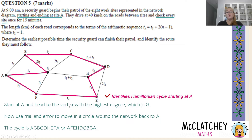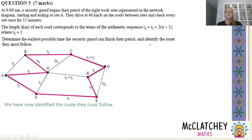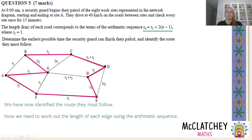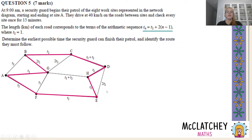By identifying a Hamiltonian cycle starting at A, you earn your first mark out of seven. You've also already answered the second part — identifying the route the security guard must follow. Now the next step is to work out the length of every edge using the arithmetic sequence. We're told t_1 = 1, so anywhere t_1 appears in the network, we replace it with 1.